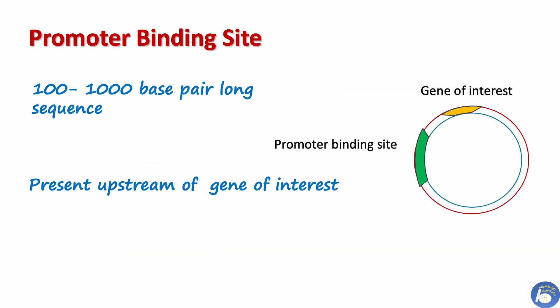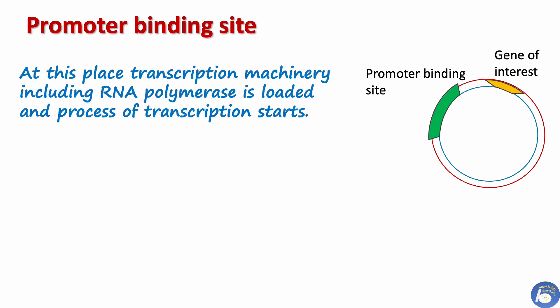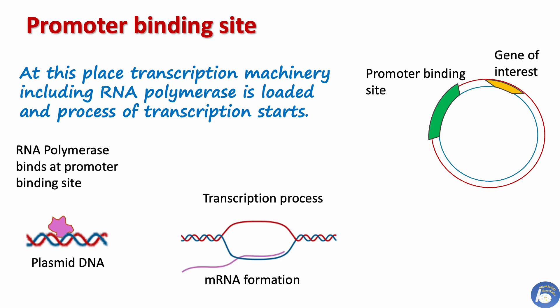The promoter site is a 100 to 1000 base pair long sequence present upstream of the gene of interest. The promoter site is the place where the transcription machinery is loaded and the process of transcription begins. RNA polymerase binds at the promoter site and starts copying the DNA gene sequence into mRNA.